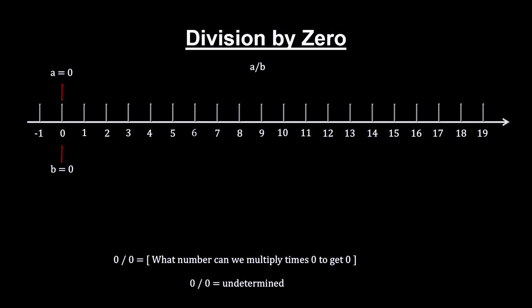This makes zero divided by zero completely undetermined. It can be any number you can think of. This is what gave us the one equals two result.